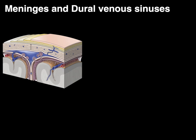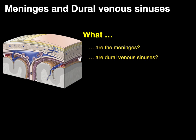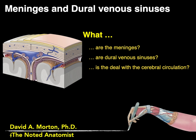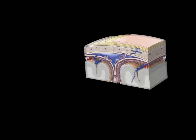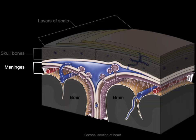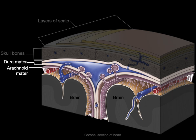We're going to talk about meninges and dural venous sinuses and answer the questions: what are the meninges, what are dural venous sinuses, and what is the deal with the cerebral circulation? Taking this coronal section at the top of the skull, we can see the layers of the scalp, deep to that the skull bones, deep to that the meninges, and deep to that is the brain tissue. Our focus is going to be on the meninges — specifically the dura mater, the arachnoid mater, and the pia mater.